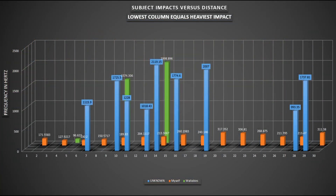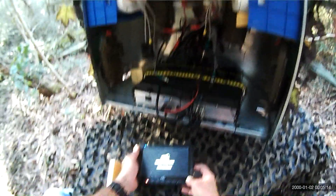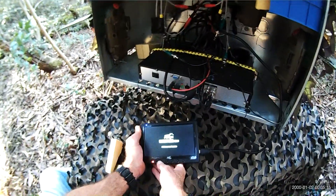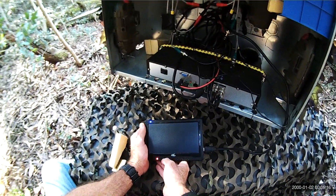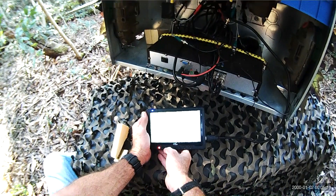Here's the new chart and it's showing something very different to the previous chart. Although I can't prove it you can see it for yourself — the chart is saying that this subject would most likely be a wallaby. At 8 minutes and 26 seconds on the same video, we had two subjects move past the gear.